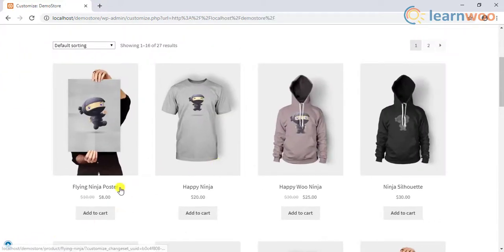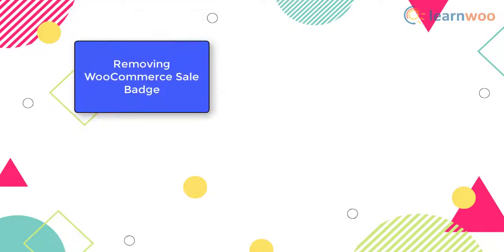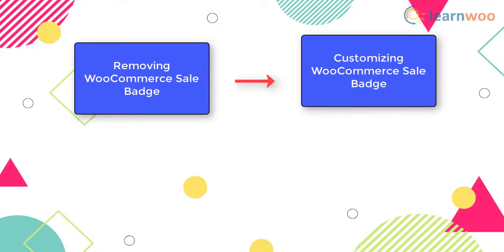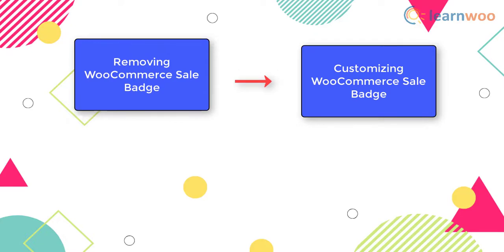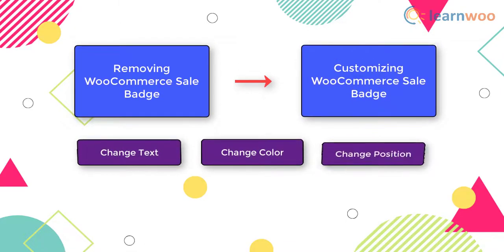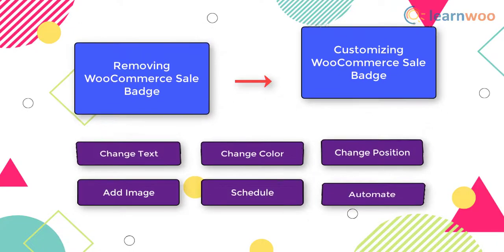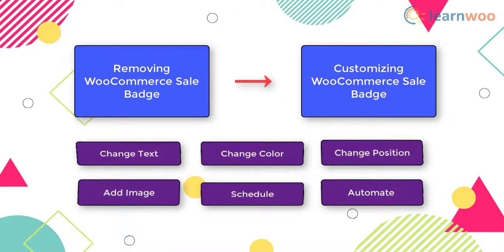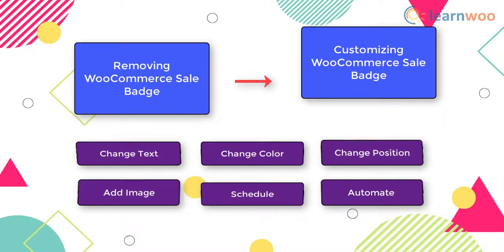In this way you can remove the sale badge on your WooCommerce store. But instead of removing the sale badge completely, you can choose to customize it. You can change the text, color, position, add an image, schedule or automate it, and do much more. We will look into some of the customizations that you can do with code snippets as well as plugins.